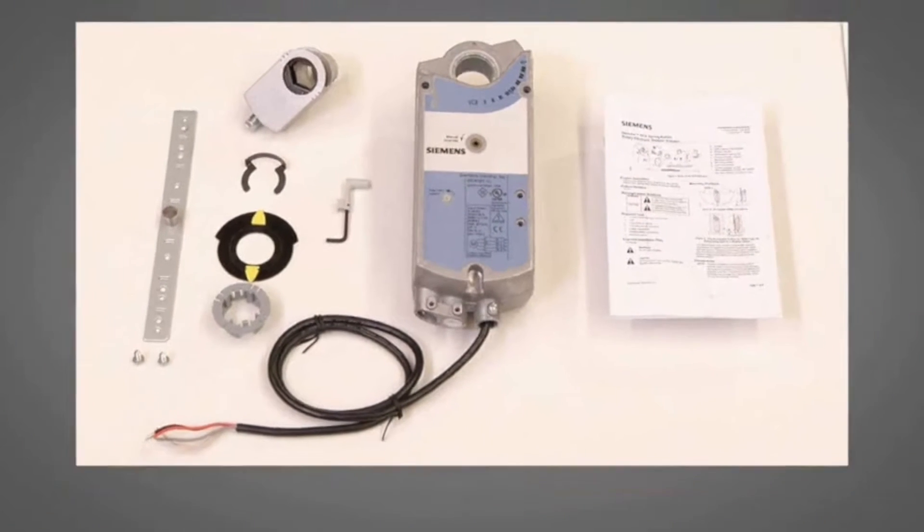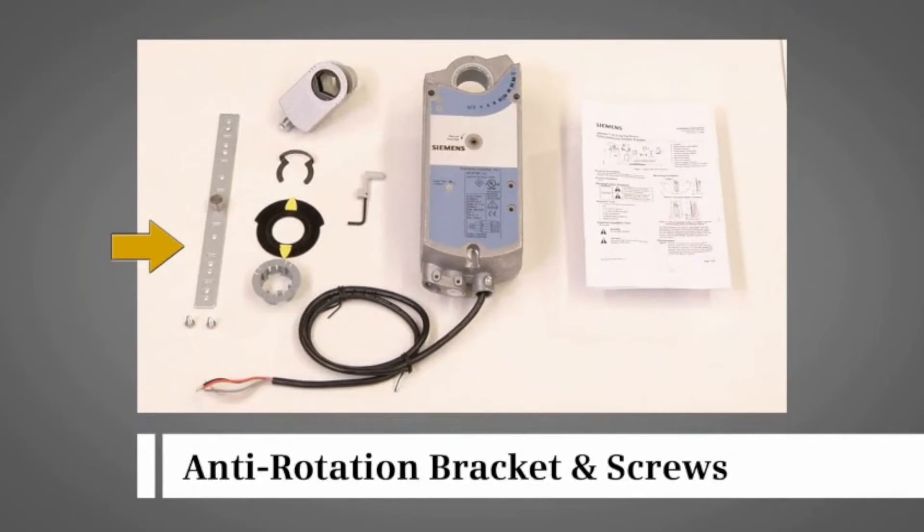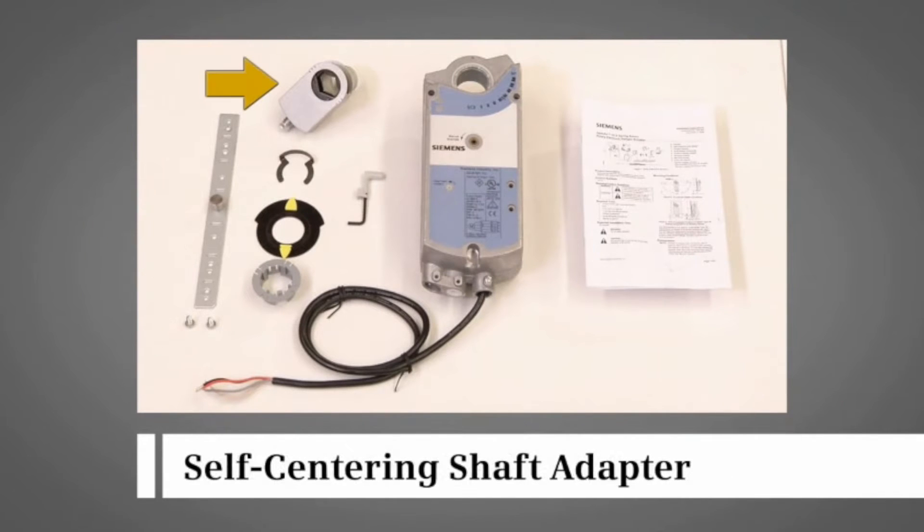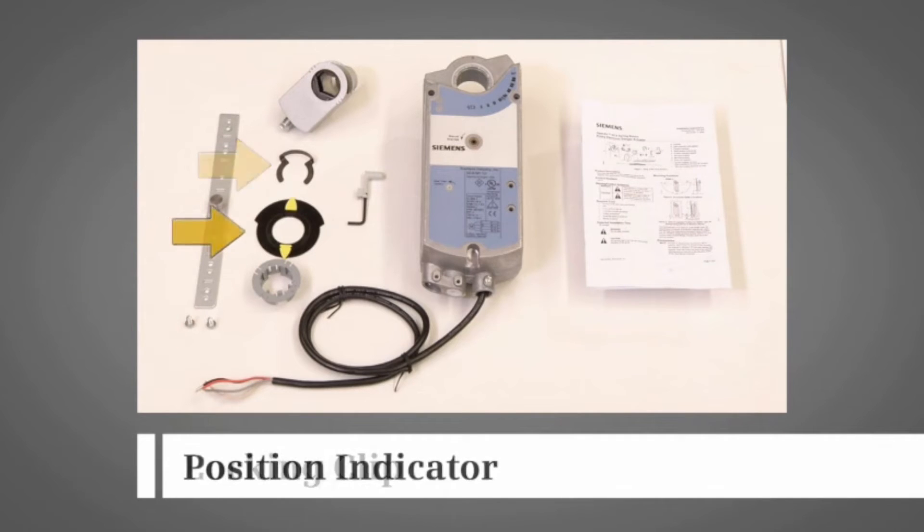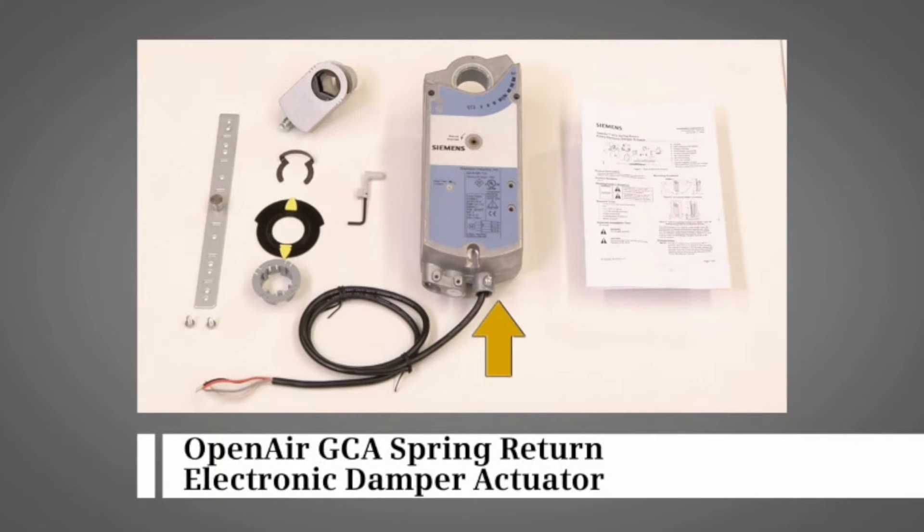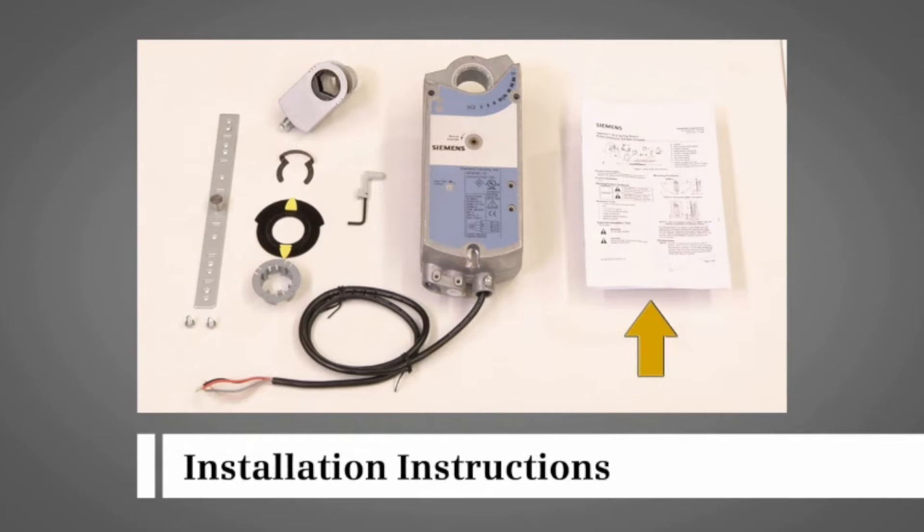The product package includes an anti-rotation bracket and mounting screws, a self-centering shaft adapter, a locking clip, a position indicator, a 3 millimeter hex key, an open-air GCA spring return electronic damper actuator, and installation instructions.